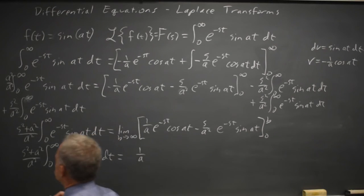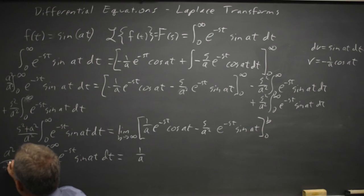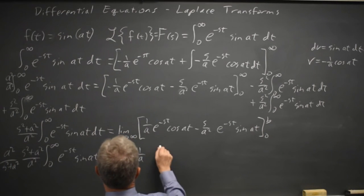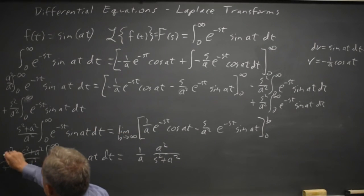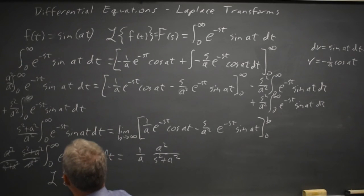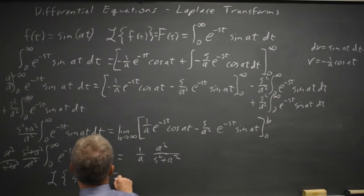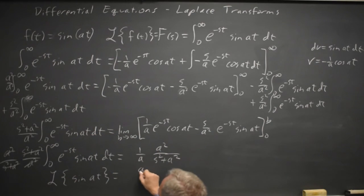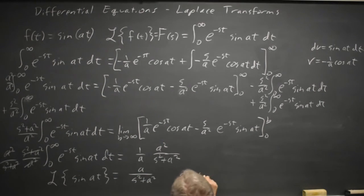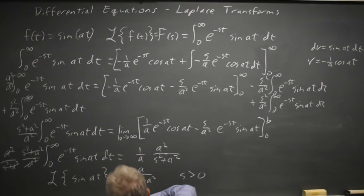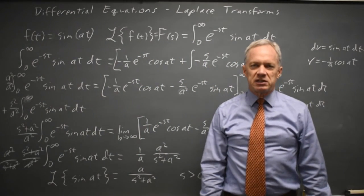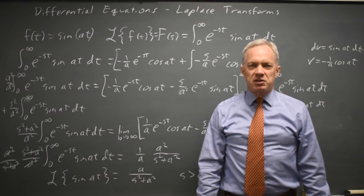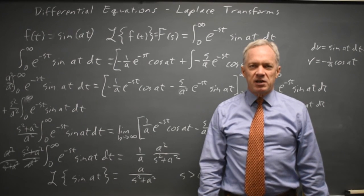Multiplying both sides by a squared over s squared plus a squared to move this rational expression to the right, these cancel, these cancel, and I'm left with just the Laplace transform of sine at on the left. On the right I get a over s squared plus a squared, and I implicitly used s greater than zero when I found that the exponential goes to zero as t goes to infinity. So this is the Laplace transform of sine at. Come back soon for my next differential equations video — with math, there's always more.